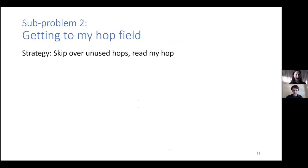And so with this approach, thanks to this extension, the path comes out unchanged. And we only need to now solve the second sub-problem, which is getting to my hop field. So what we want to do is skip over the unused hops and read my hops, right? So obvious solution. Once again, packet advance, standard P4 feature. Unfortunately, this only works when X is a compile time constant, when we are skipping something that is known at compile time. So we cannot actually use it to skip over the variable length path.